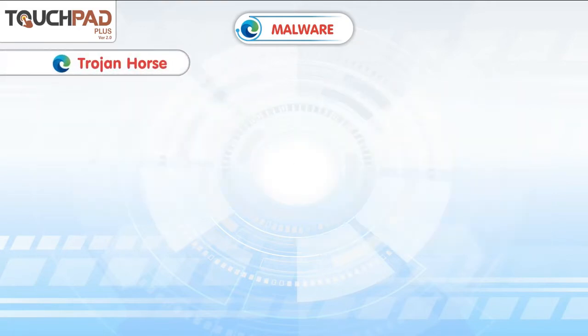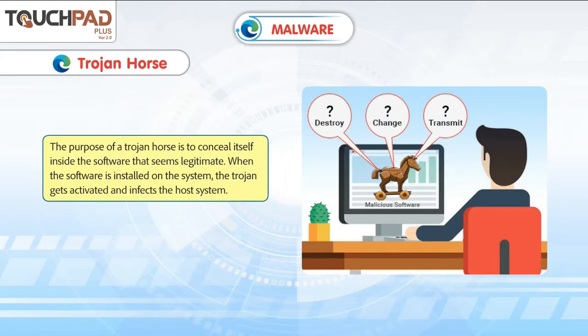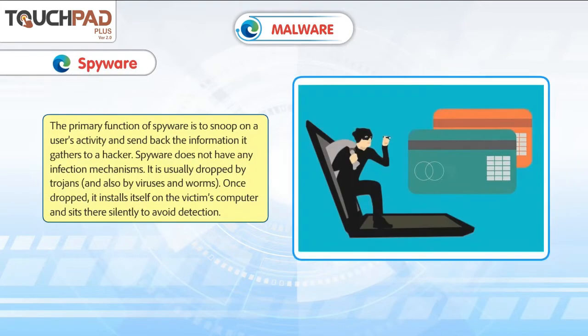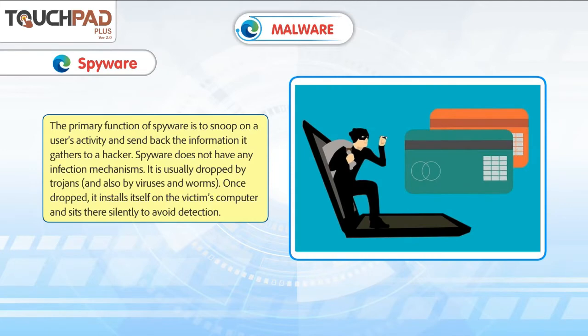Trojan Horse: The purpose of a Trojan horse is to conceal itself inside software that seems legitimate. When the software is installed on the system, the Trojan gets activated and infects the host system.